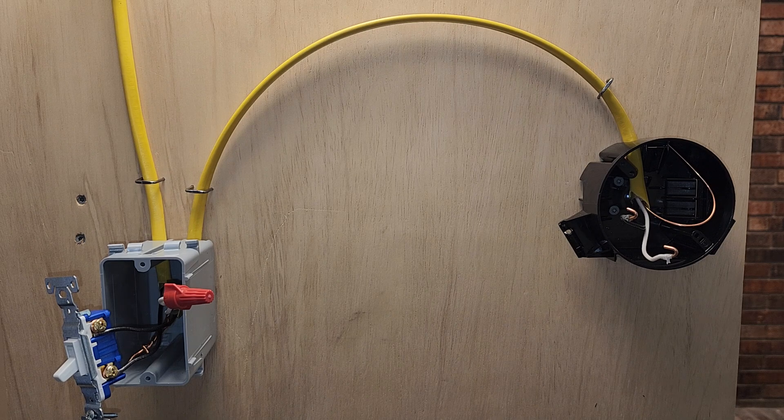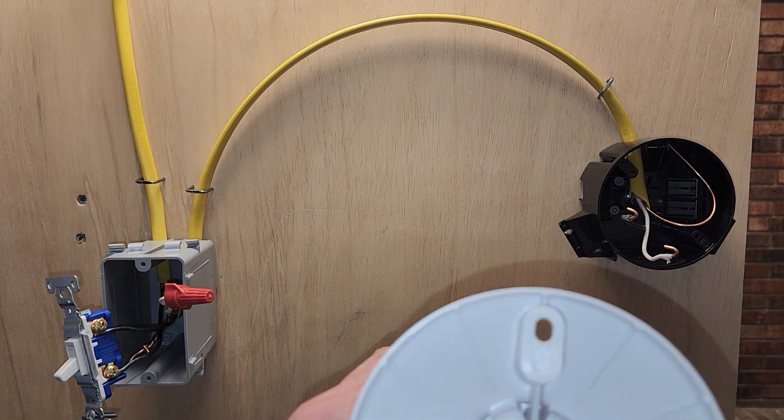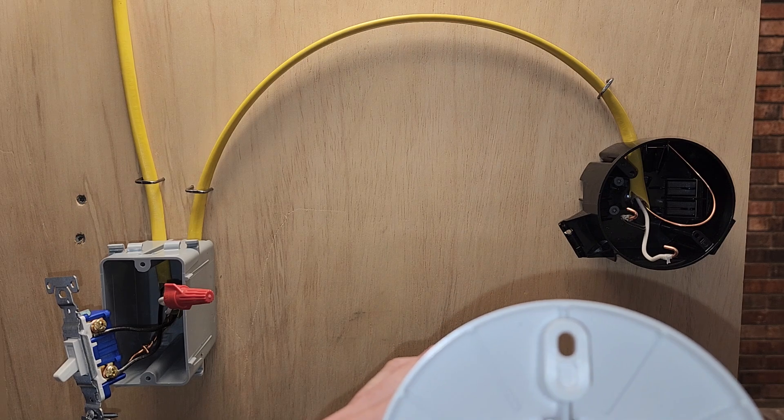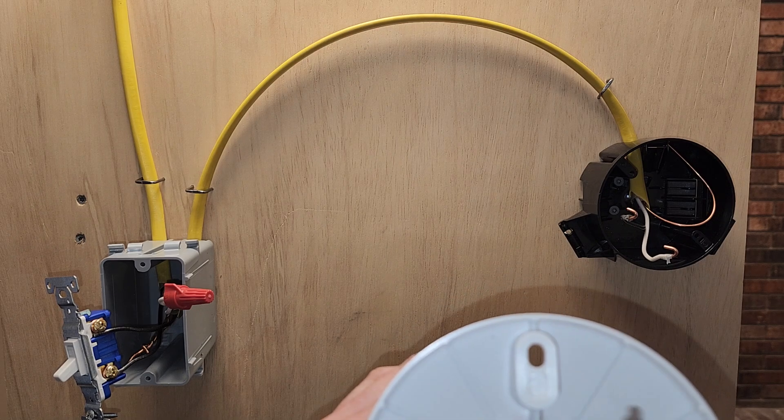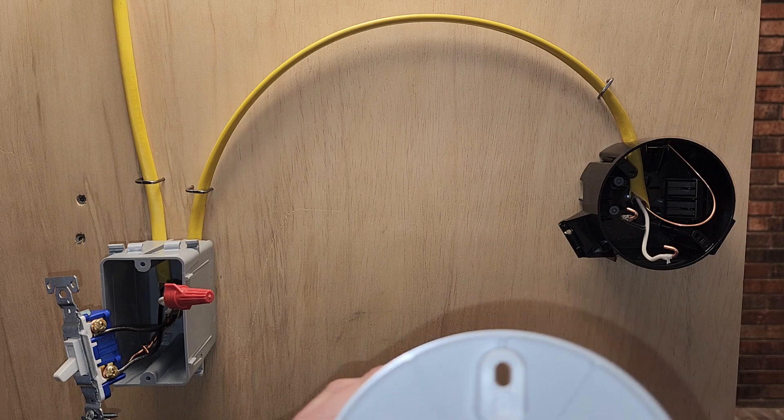And you can see here, the black always goes to bronze, your white always goes to silver. So, hot, bronze, neutral, silver.